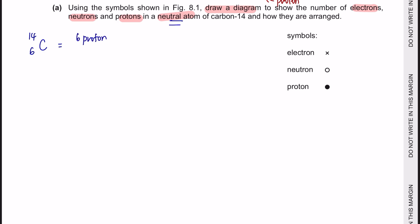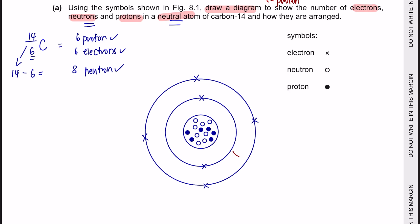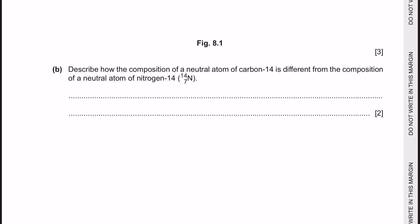Since this is a neutral atom, we will also have the same number of electrons, which is 6. For the neutrons, we take the total nucleon number minus the proton number to get the neutron number. Your protons and neutrons will be placed in the nucleus and electrons will be placed on the shell. Remember that the first shell can only hold a maximum of 2 electrons, and since we have a total of 6 electrons, the remaining 4 electrons will be placed on the second shell.